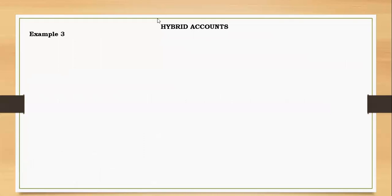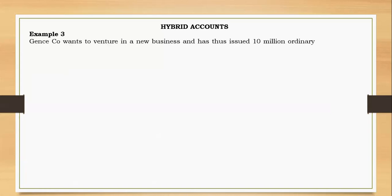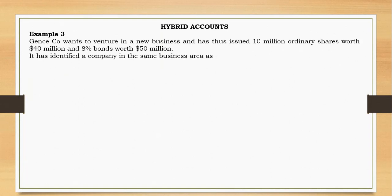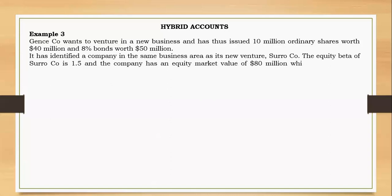Example 3: Jane's company wants to venture into a new business. It has issued 10 million ordinary shares with a value of 40 million dollars, and 8 percent bonds worth 50 million dollars. It has identified a surrogate company, Suro Company, in the same business area. The equity beta of Suro Company is 1.5, with an equity market value of 8 million and debt of 25 million.